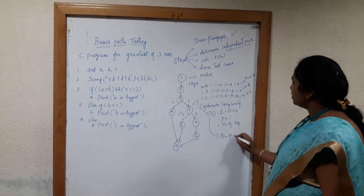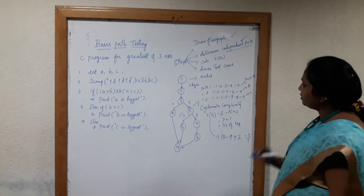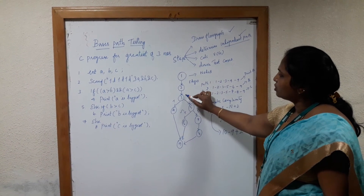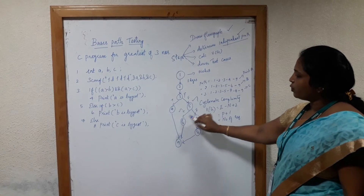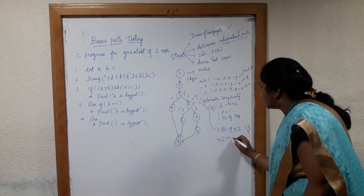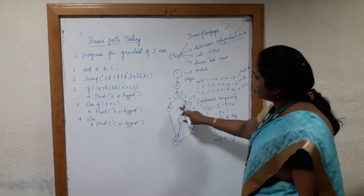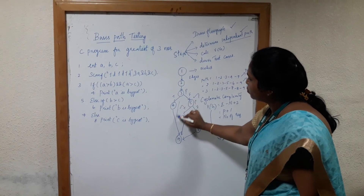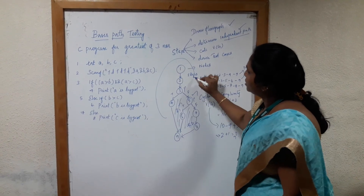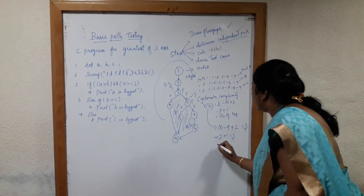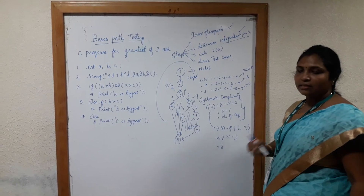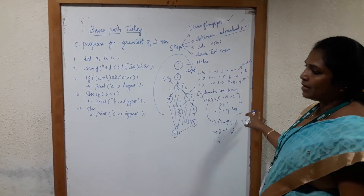Number of nodes is 9, so E minus N plus 2 gives 10 minus 9 plus 2 equals 3. For P plus 1: node 3 has two outgoing edges so it is a predicate node, and node 5 also has two outgoing edges so it is another predicate node. With 2 predicate nodes, P plus 1 gives 3. For regions: R1 is one closed region, R2 is another closed region, and R3 is the outer region — totally 3 regions. Using all three formulas you get the same answer: cyclomatic complexity is 3.